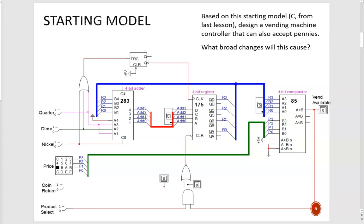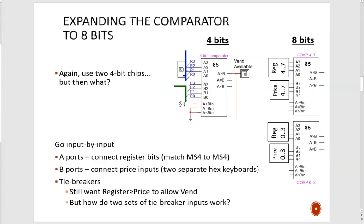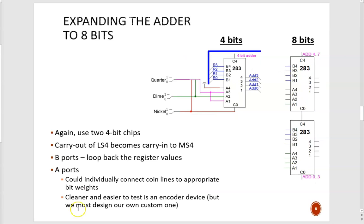In the previous video we began our adaptation of the Vending Machine Controller to accept pennies. We saw how to expand each of the main devices to 8 bits. The major step remaining is to build a coin encoder that will convert coin inputs into binary outputs that can be fed into the adder.